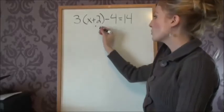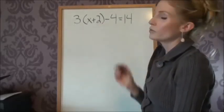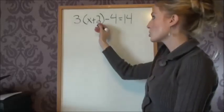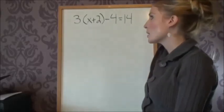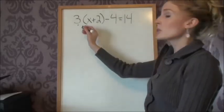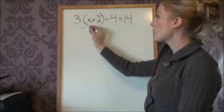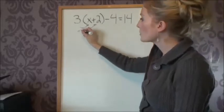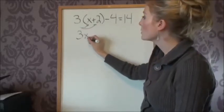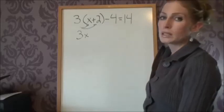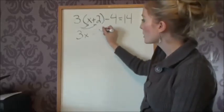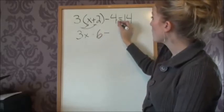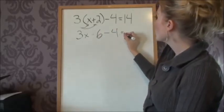Whenever we see a bracket, we can first check and see, can we simplify inside the bracket? Well, we can't because it's an x term and a constant, so we can't combine those. So we're going to take the 3 and take it into this bracket. We're going to expand it out. So 3 times x gives us 3x. 3 times positive 2 gives us plus 6. Then we have minus the 4 equals 14.